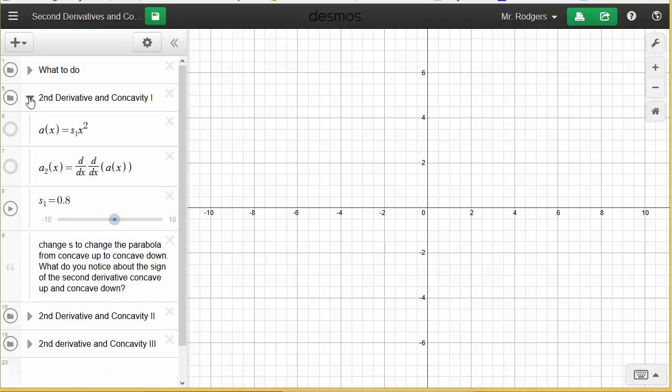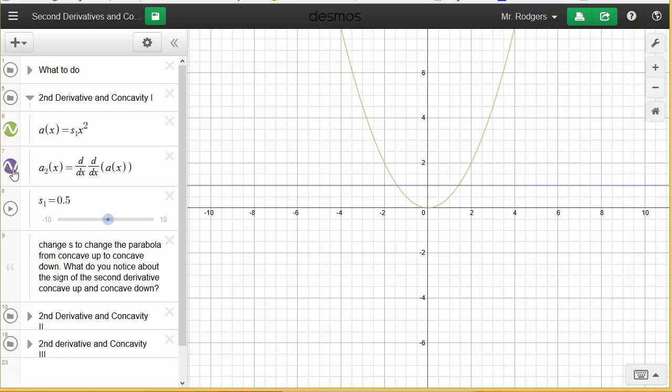The first one is just a parabola, so you're going to turn that on and you can control its concave up-ness and concave down-ness by manipulating the slider S. Once you get familiar with that, turn on the second derivative, which is indicated here by d/dx d/dx a(x), and a(x) is the original function.